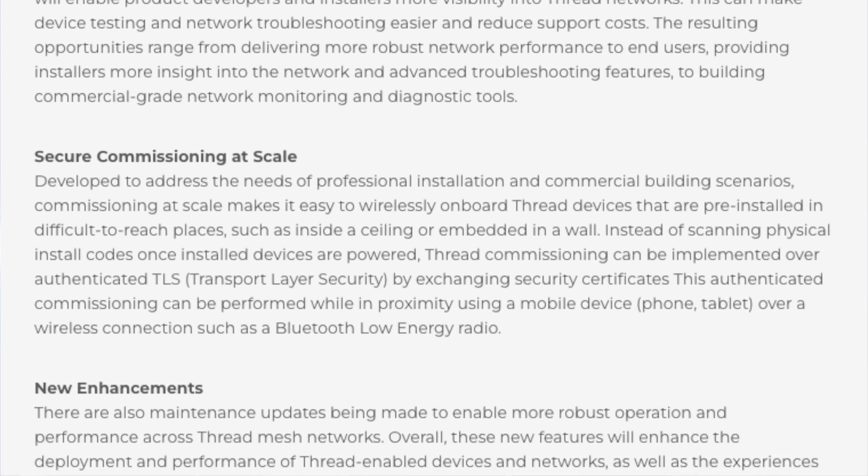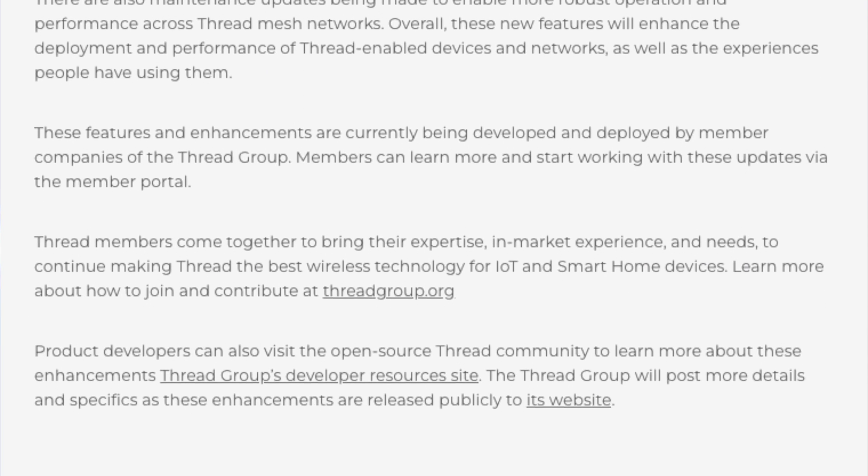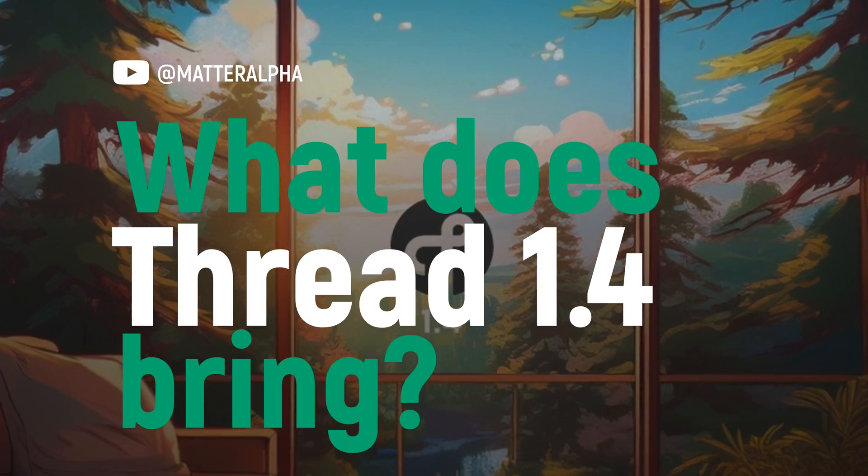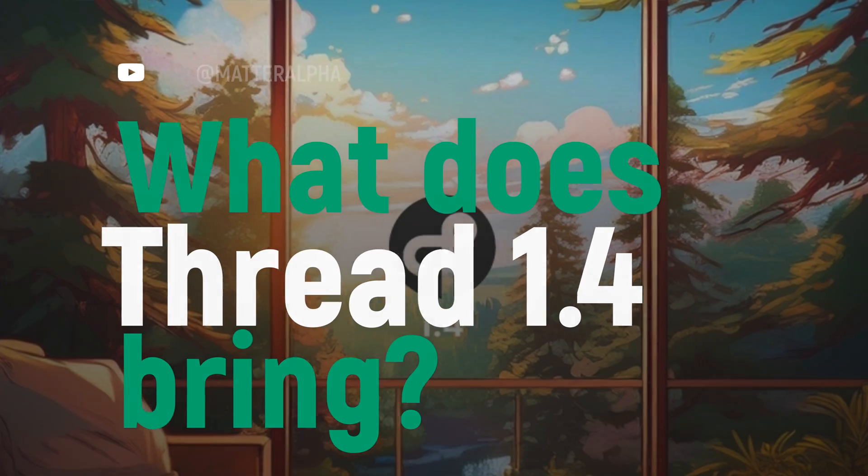I'm not going to go over the full ins and outs of Thread on a technical level, because we already have a whole video on that elsewhere — link in the description, or hopefully on a little card up there. I'm James, you're watching MatterAlpha.com, home of all things Matter in the smart home. Briefly though, Thread is a low-power mesh network based on existing IP standards, which makes it easy for manufacturers to adopt and integrate into their products, and makes it perfect for a smart home.